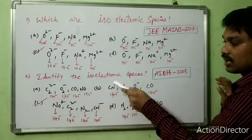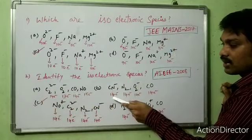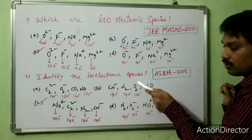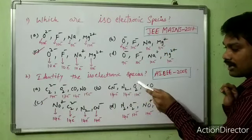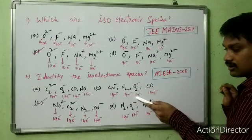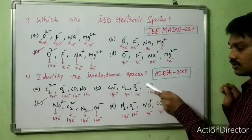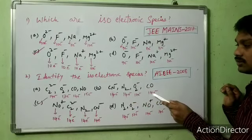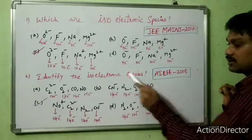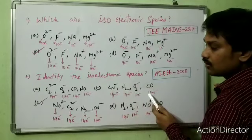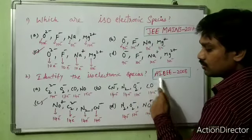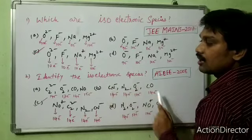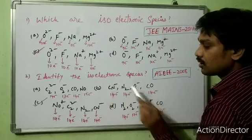Option B: CN⁻ has 14 electrons, N₂ has 14 electrons, O₂⁻ has 17 electrons, and CO has 14 electrons. There is no similarity among all species in this set, so option B is not an isoelectronic species.